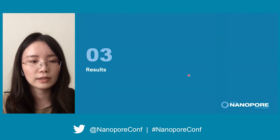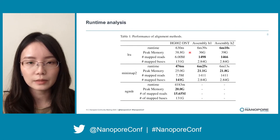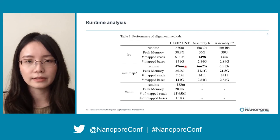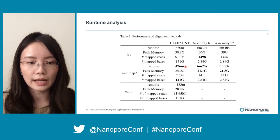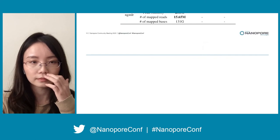Now let's move on to the results. First, the runtime analysis of different aligners. For aligning nanopore reads, Minimap2 is faster than LRA and NGMLR. The runtime of LRA is about 130% of Minimap2 when generating SAM alignment, and it's about 15% of NGMLR when aligning in assembling context. The runtime of LRA and Minimap2 is about the same, although LRA takes roughly twice the memory. It was impossible for NGMLR to align in assembling context.